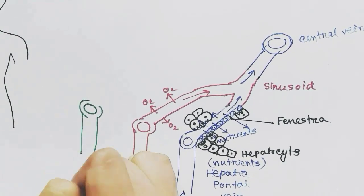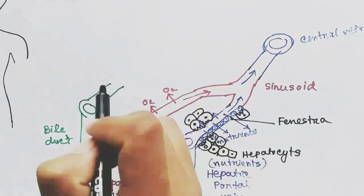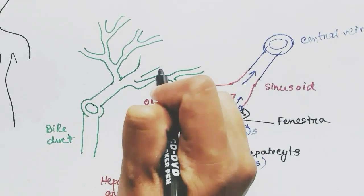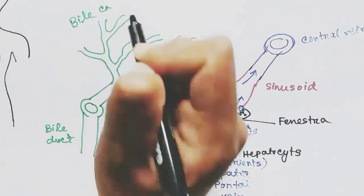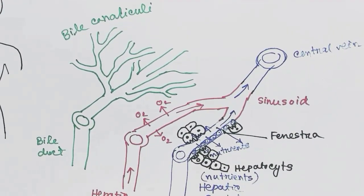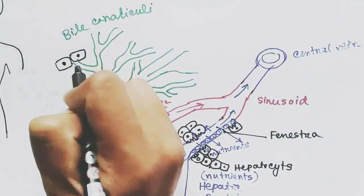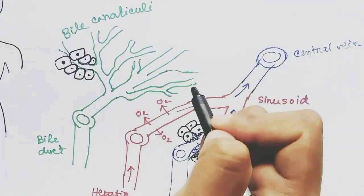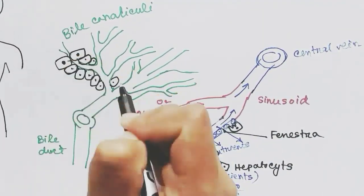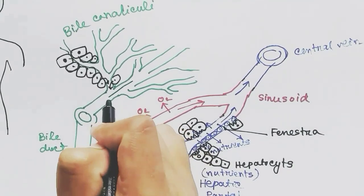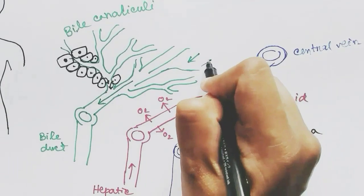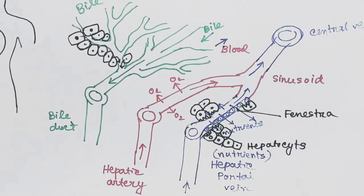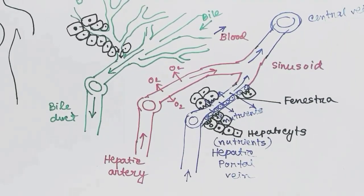The bile duct has its branches throughout the hepatocytes — these are called the bile canaliculi — and they run throughout the hepatocytes. The hepatocytes release bile into the bile canaliculi, and the bile is transported towards the bile duct. The transportation of bile is opposite to the direction of blood transport: blood goes towards the central vein, and bile goes in the opposite direction.